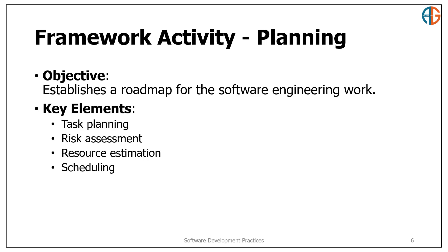Next we have planning. In this phase we create a roadmap for the entire software engineering process. Key elements include task planning, assessing risk, estimating resources, and creating a project schedule. This phase helps ensure that the project stays on track and that potential risks are accounted for in advance.